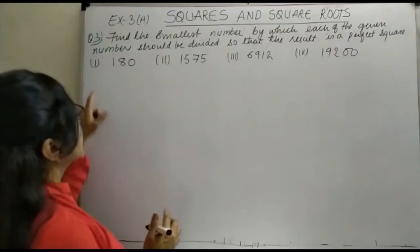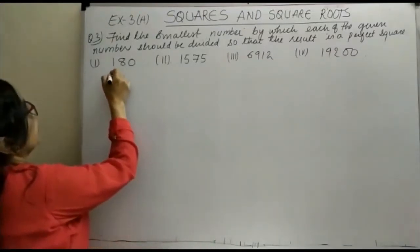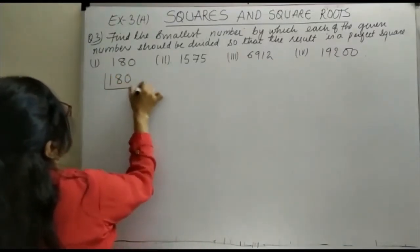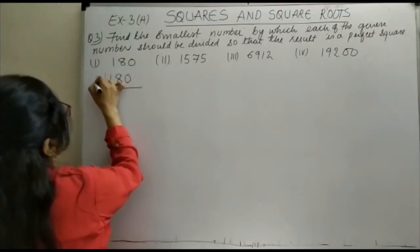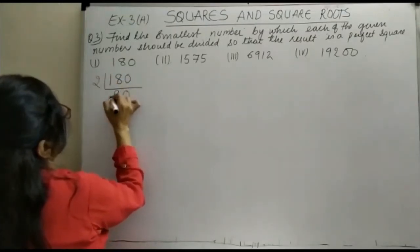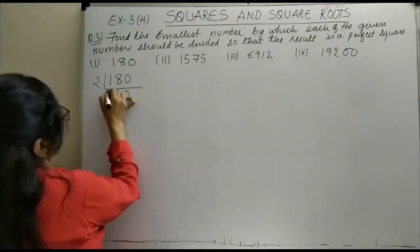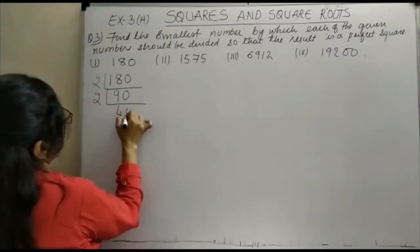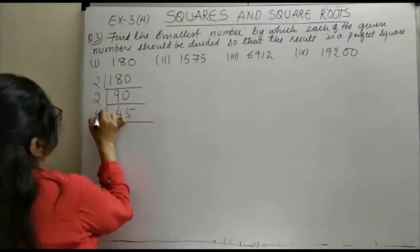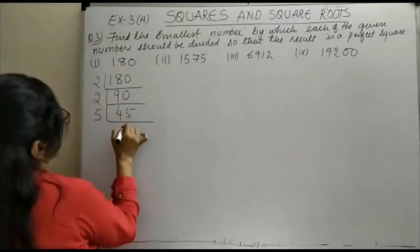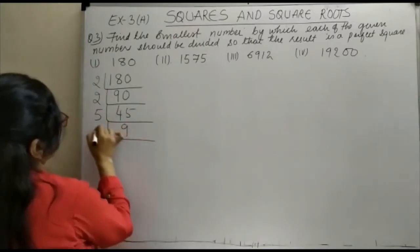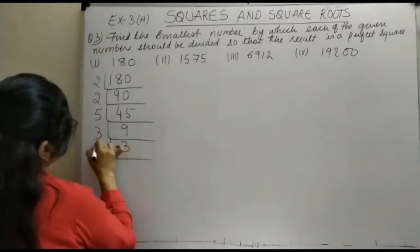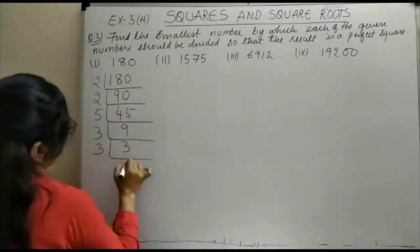Let us see — the first question is 180. We do the prime factorization: 2 divides 180, then 2 divides 90, then we get 45. Then 5 divides 45 to give 9, and 3 divides 9 to give 3, and 3 divides 3 to give 1. So the prime factors are 2 × 2 × 3 × 3 × 5.